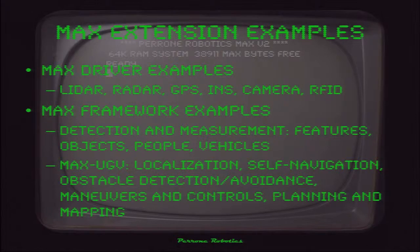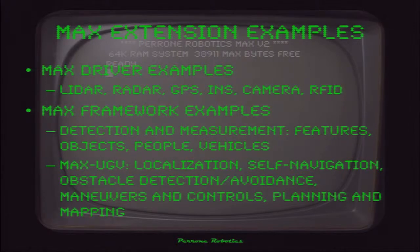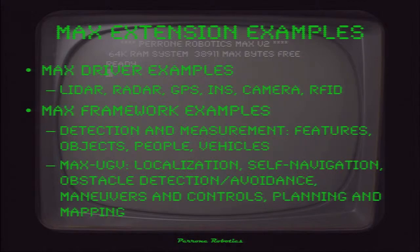Driver examples include LiDAR — lasers that emit beams and tell you the range to where things are — radar, GPS, inertial nav, cameras, and RFID. These are all common types of sensors we support with drivers. We've done some frameworks — a lot of detection and measurement work: detecting and measuring vehicles using sensors on the Pennsylvania Turnpike, people detection, and MAX UGV used in the DARPA Grand Challenges for autonomous ground vehicle controls.